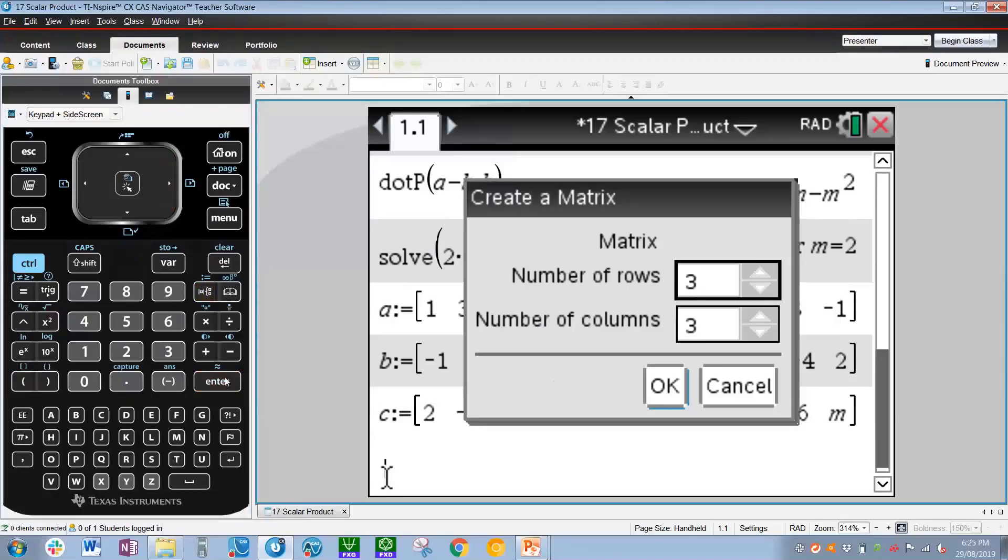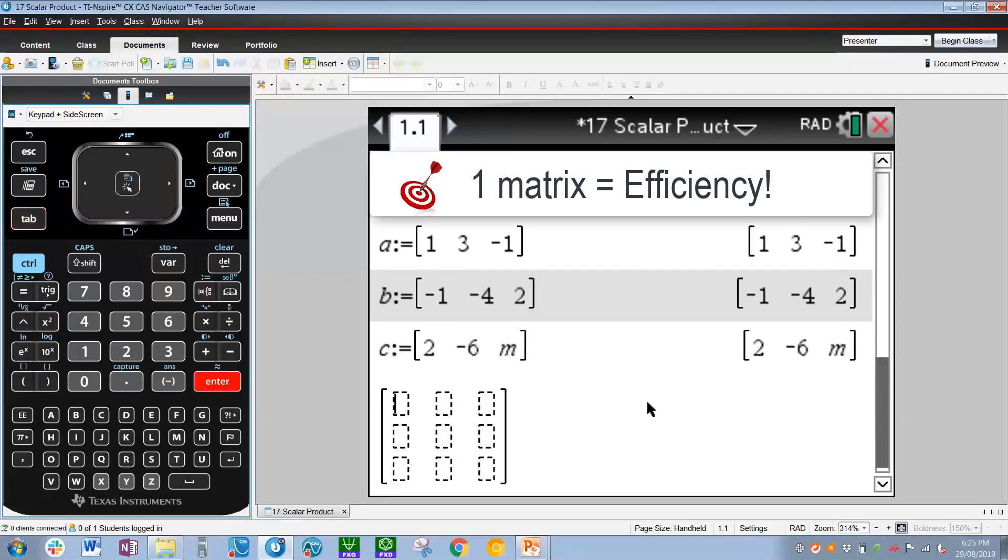So to get a matrix going, I'm going to press the template button and scroll until we get to the three by three matrix there. Press enter. The CAS now asks us how many rows and how many columns. We want three and three each, so the default is okay. Press okay, and now we simply have to type in all these individual numbers.